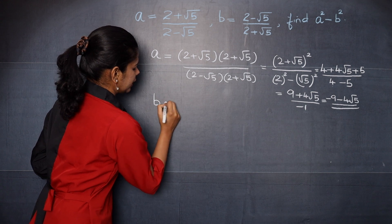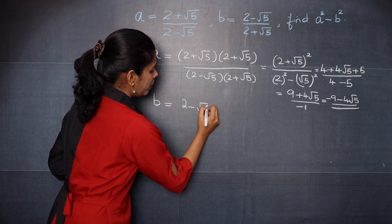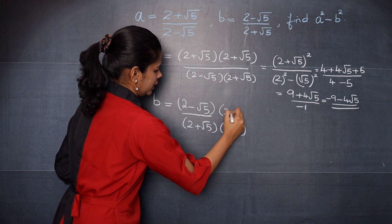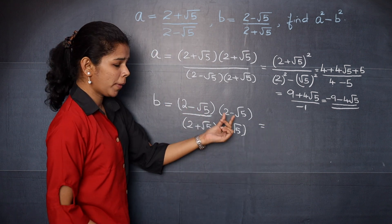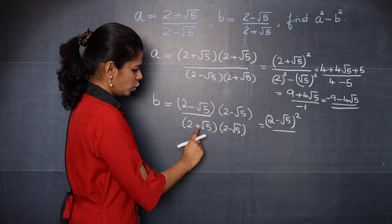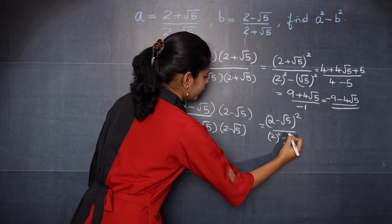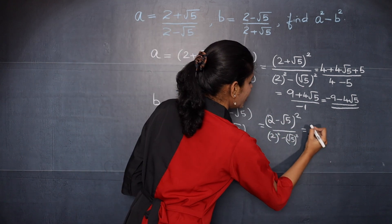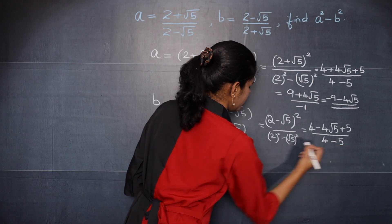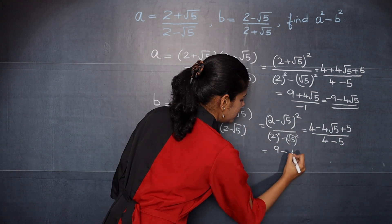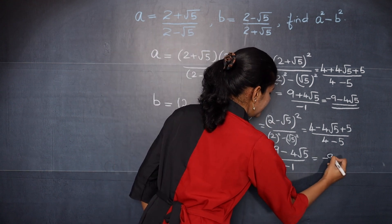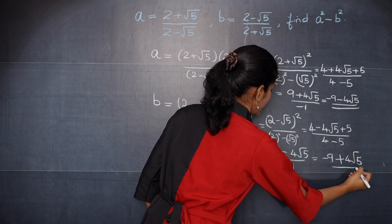Now let's rationalize b. The conjugate of 2 plus root 5 is 2 minus root 5, so multiply numerator and denominator by 2 minus root 5. The numerator becomes 2 minus root 5 the whole square, which expands to 4 minus 4 root 5 plus 5. The denominator is 2 squared minus root 5 squared, which is 4 minus 5 equals negative 1. So that gives 9 minus 4 root 5 over negative 1. Taking the negative to the numerator, b equals negative 9 plus 4 root 5.